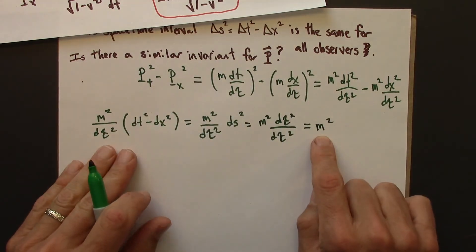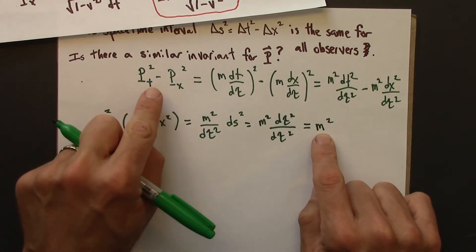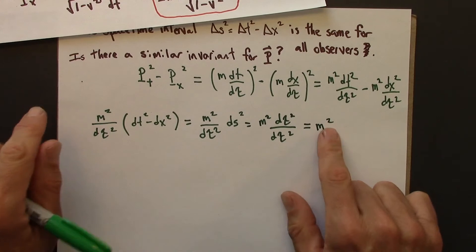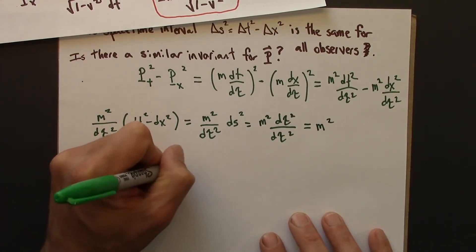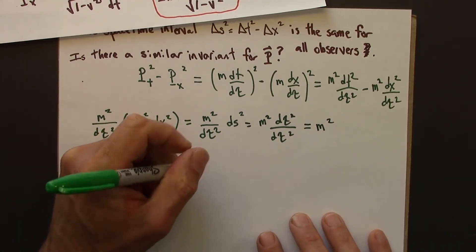M squared. So M squared is this minus that. And let me just take the square root of both sides and write this like so.